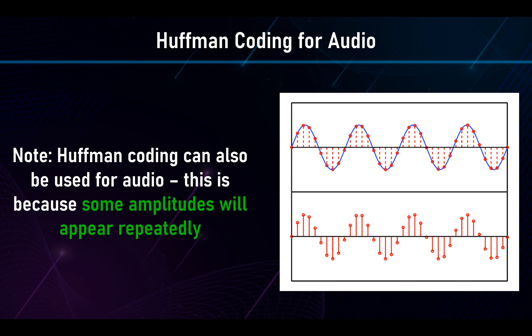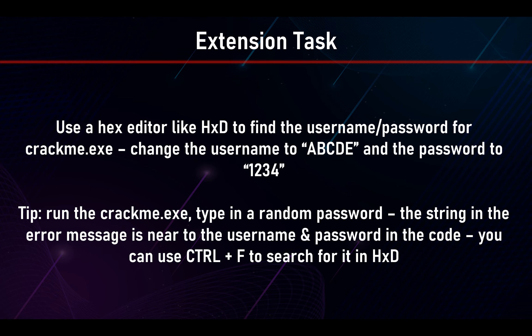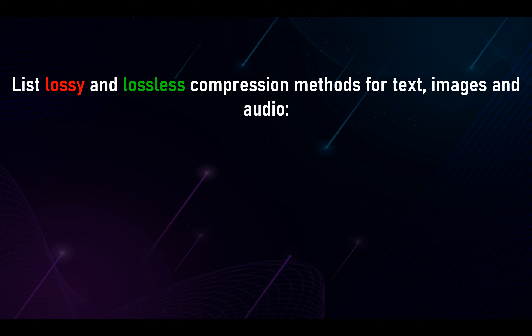Huffman coding can also be used for audio. The reason is that some amplitudes will appear repeatedly. Looking at a waveform diagram, you can see certain amplitude values that are the same at different points. So rather than storing the actual absolute value, we store the Huffman code instead. There's also an extension task available on the website that's more about hacking, involving hex and ASCII, if anyone wants to have a go.